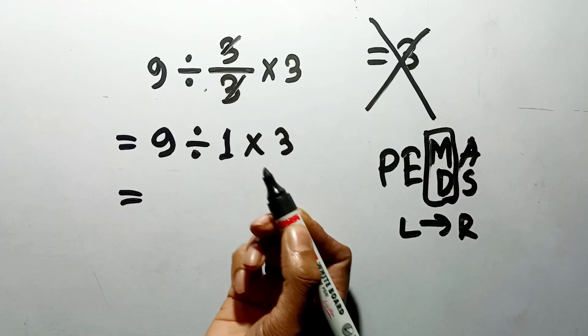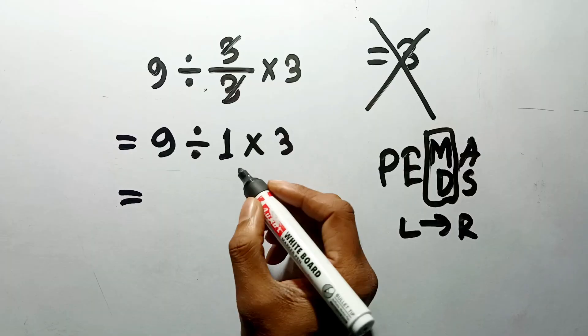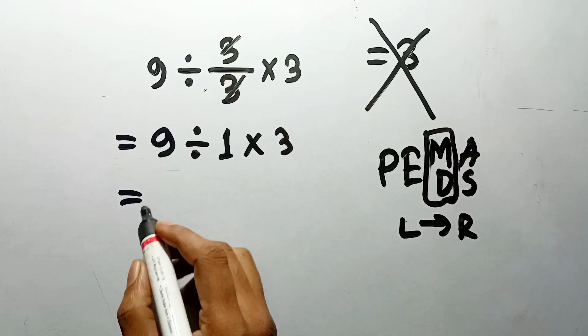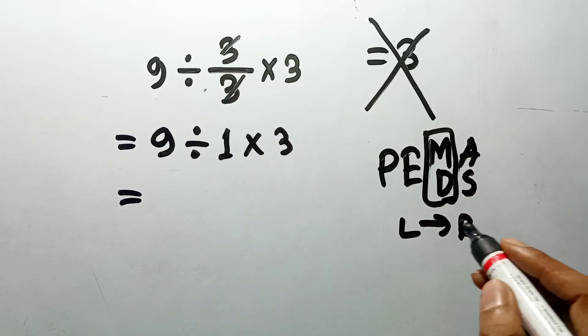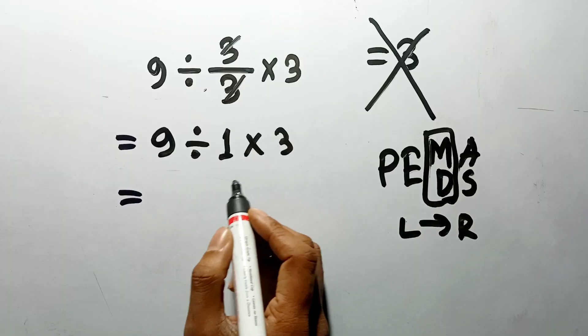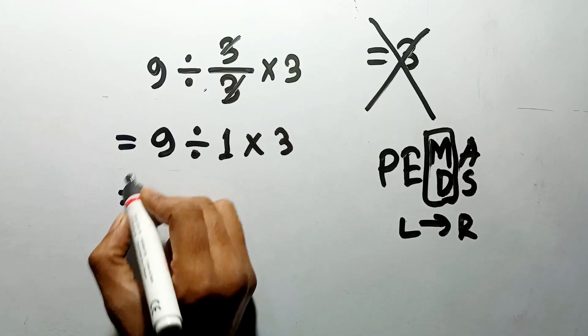Now we have one division and one multiplication. According to the PEMDAS, since they are equal priority, we must work from left to right. So here, first, we have to do this division.